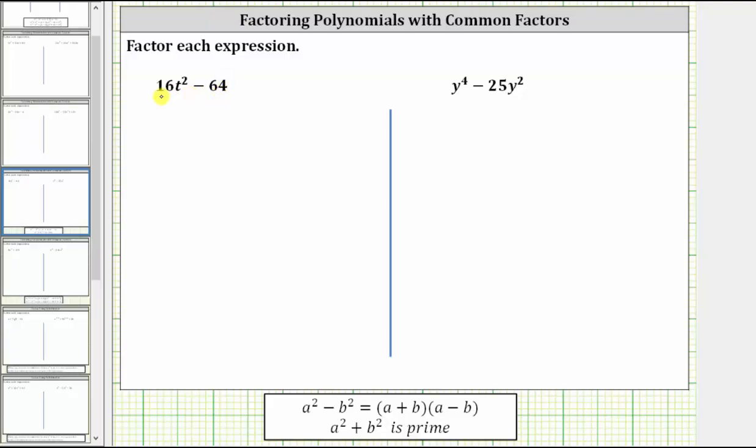We may recognize that 16t squared is a perfect square, and so is 64, so we might be thinking we should apply the difference of squares factoring formula shown here below, but this would not be correct because remember, the first step in factoring is always to factor out the greatest common factor.